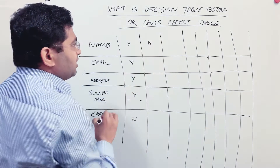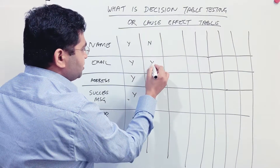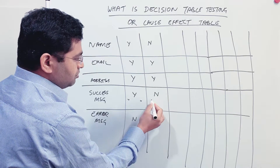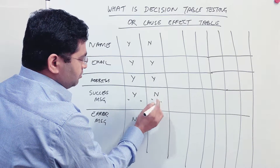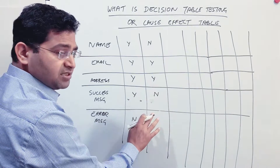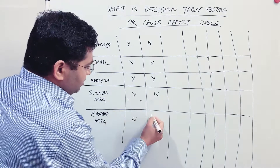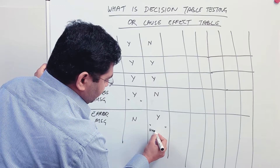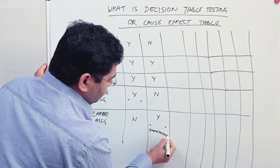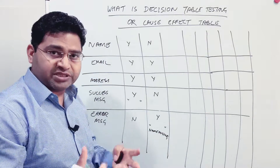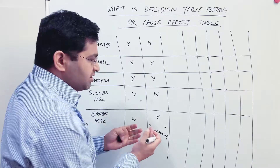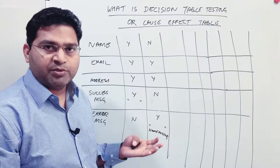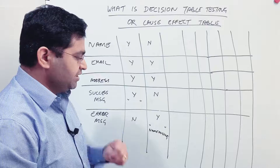In the second case, the customer hasn't provided the name — put 'No' there. They have provided email and address. Should they get a success message? No, it should fail, so you put 'No' for success message. In the error message column, you put the specific error message, for example 'Name missing.' This message comes from the business requirement — you get the exact wording from the business analyst providing the requirement.